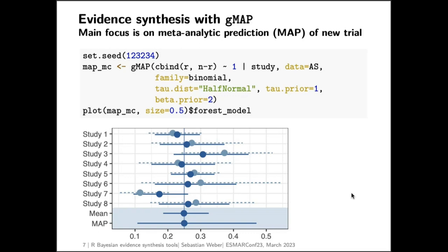The solid lines are always shrunk towards the overall population mean, which is denoted in the middle, and they also have much shorter credible intervals as they benefit from information from all other studies through the model. The key results of this analysis are: the population mean estimate — a typical response rate estimate — and more importantly the MAP estimate, which includes in addition to the uncertainty in estimating the population mean the between-trial heterogeneity, resulting in a much wider credible interval.